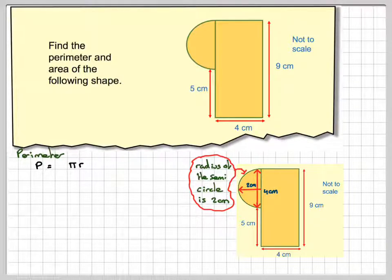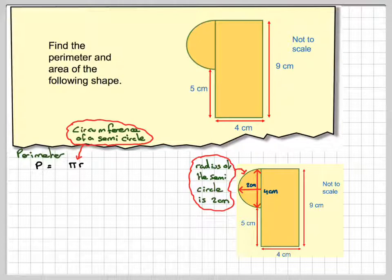So that means it's going to be pi times r plus 5 plus 4 plus 9. You should just go around the shape, and this distance here is also 4.